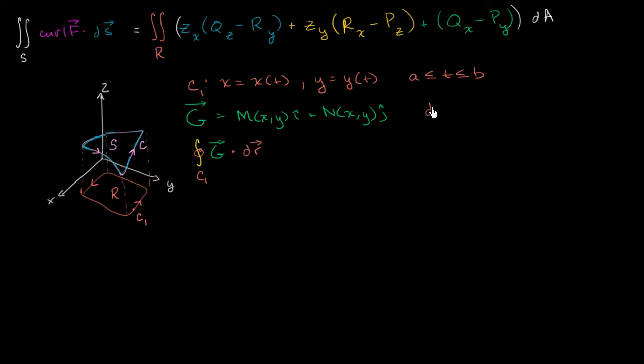Well, dr is just going to be equal to dx i plus dy j. So if you take the dot product of these two things right over here, you're going to get the line integral over our path C1. Remember, C1 is this path down here. The line integral over our path C1.